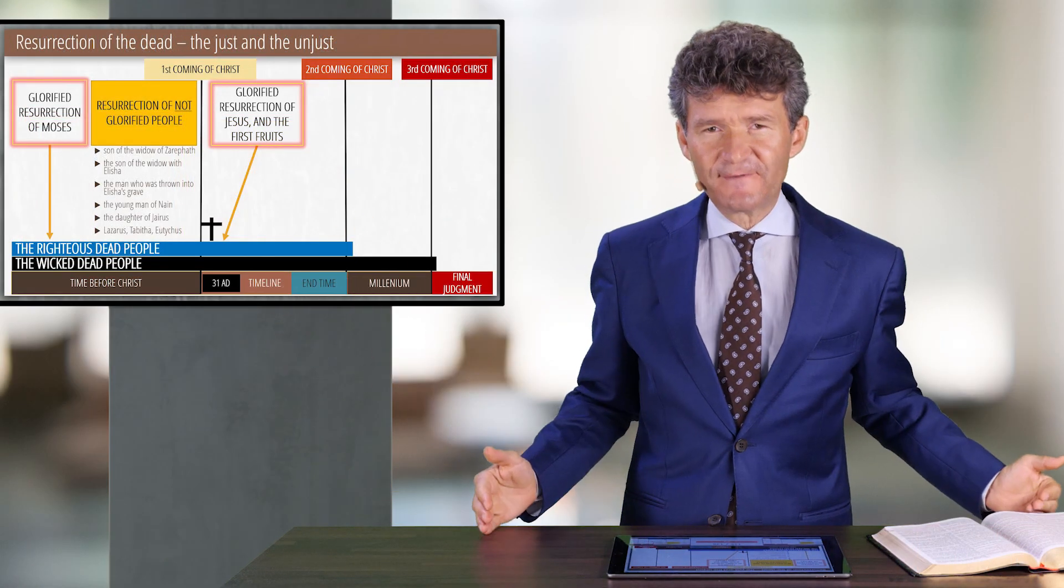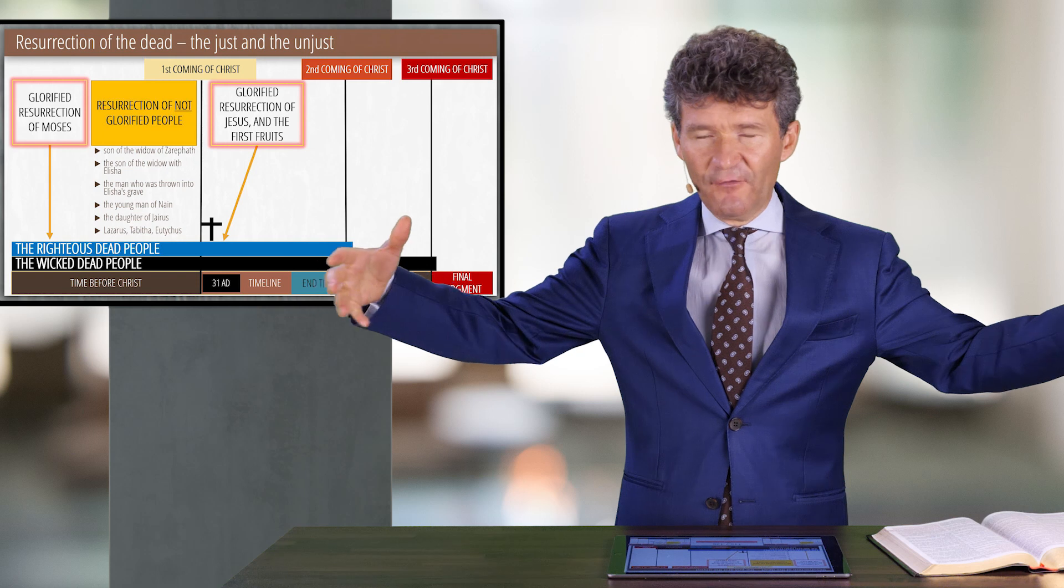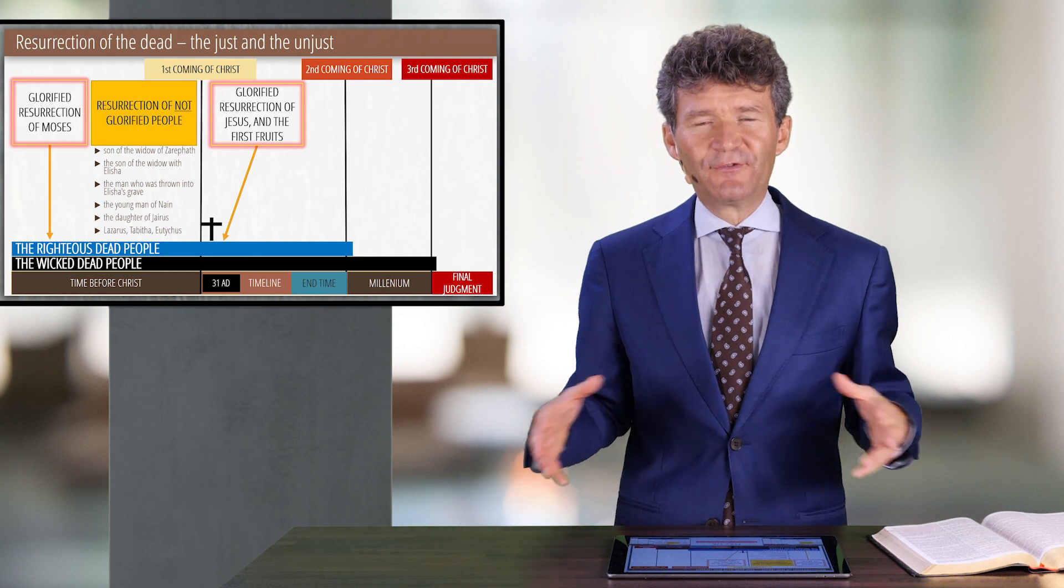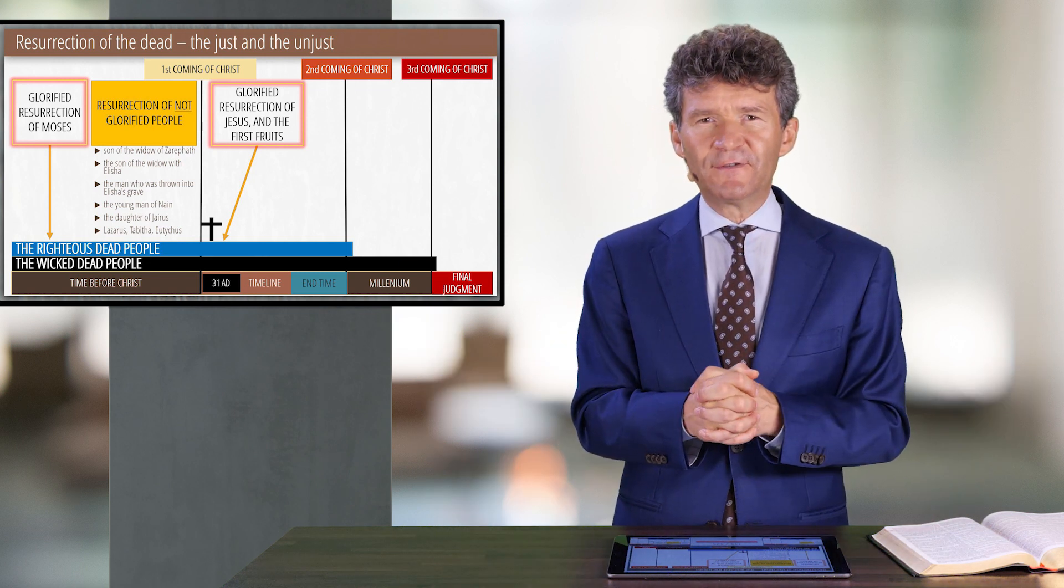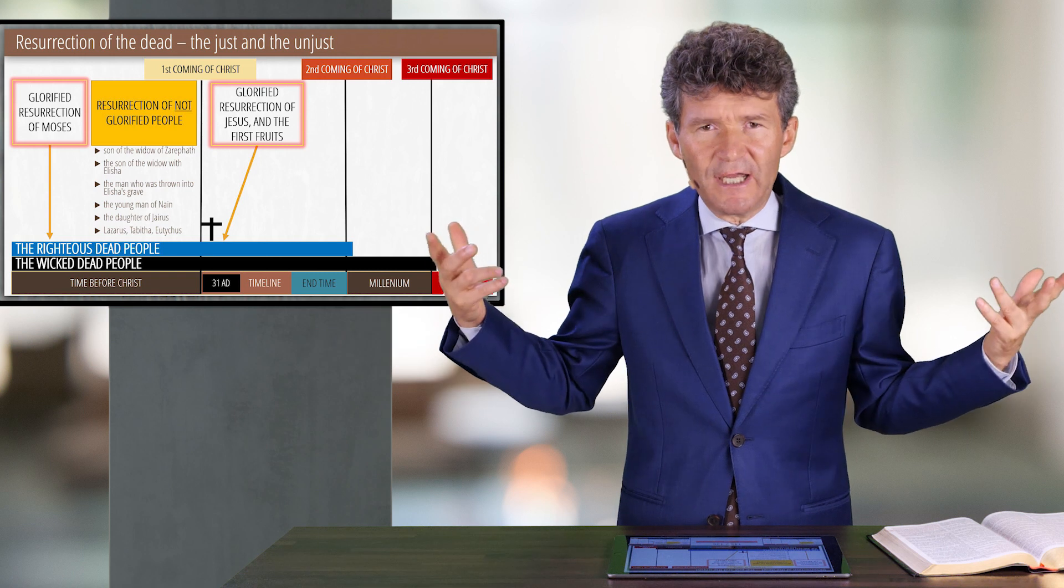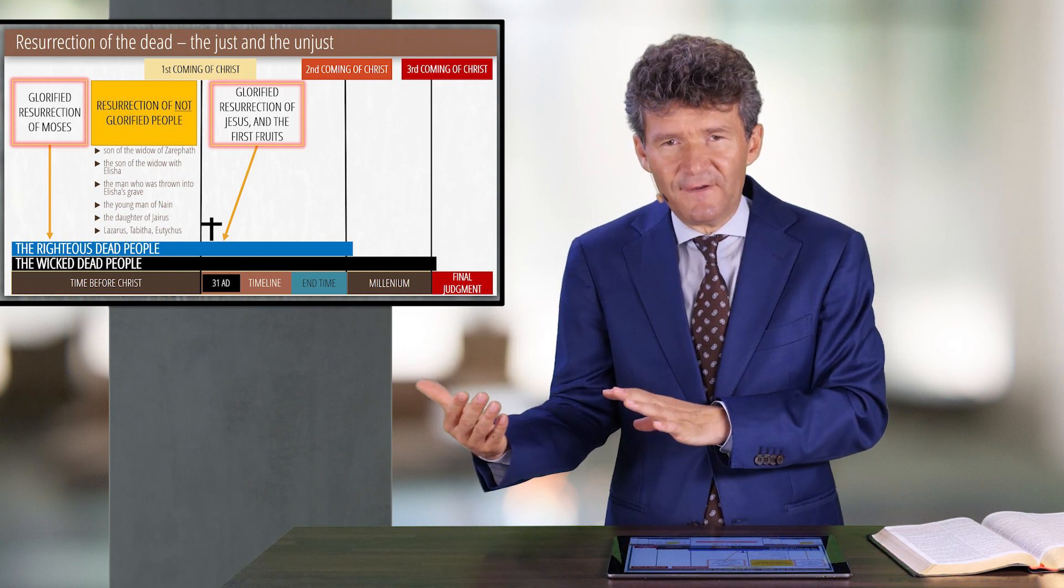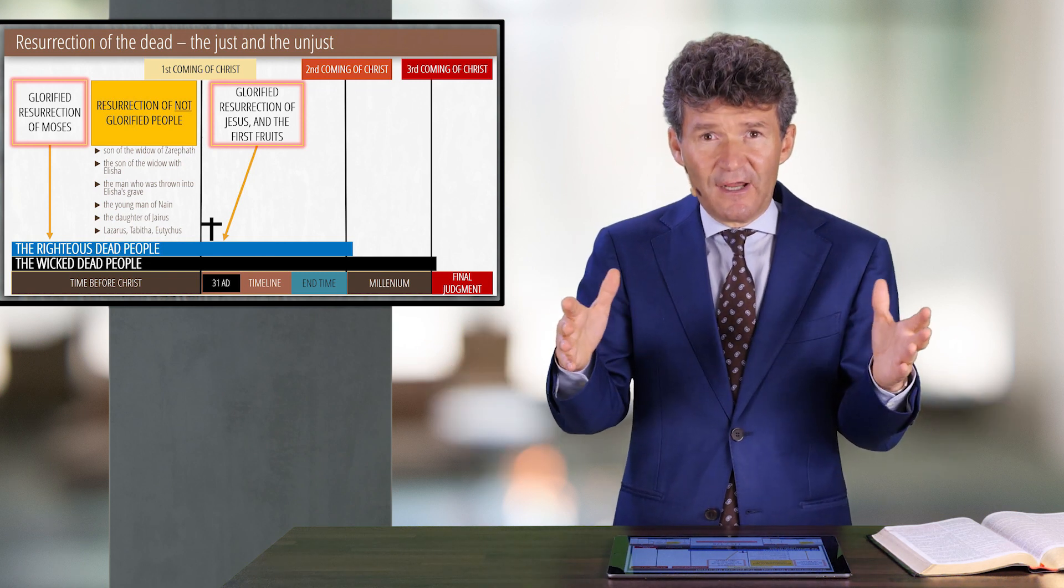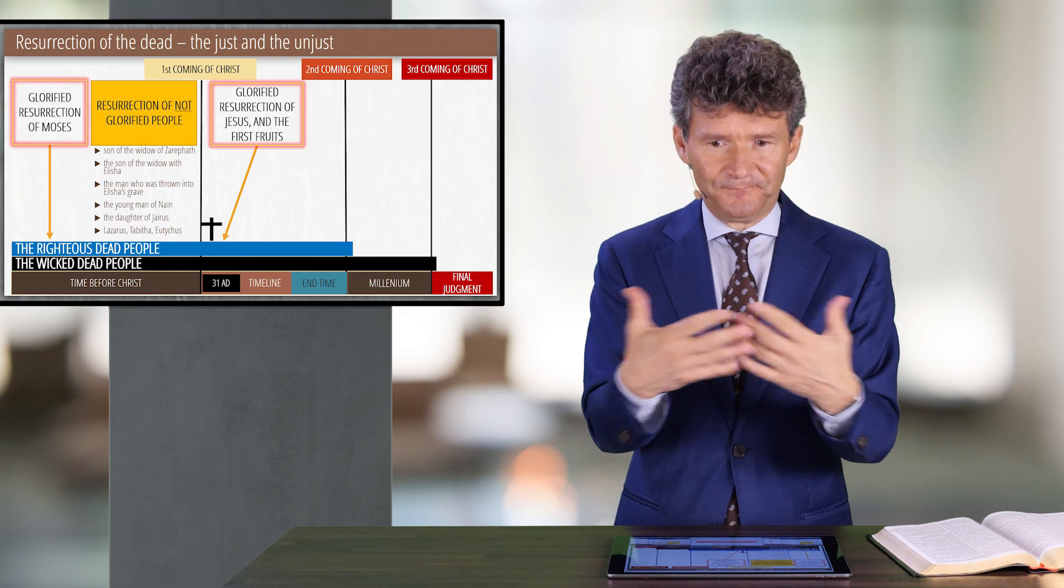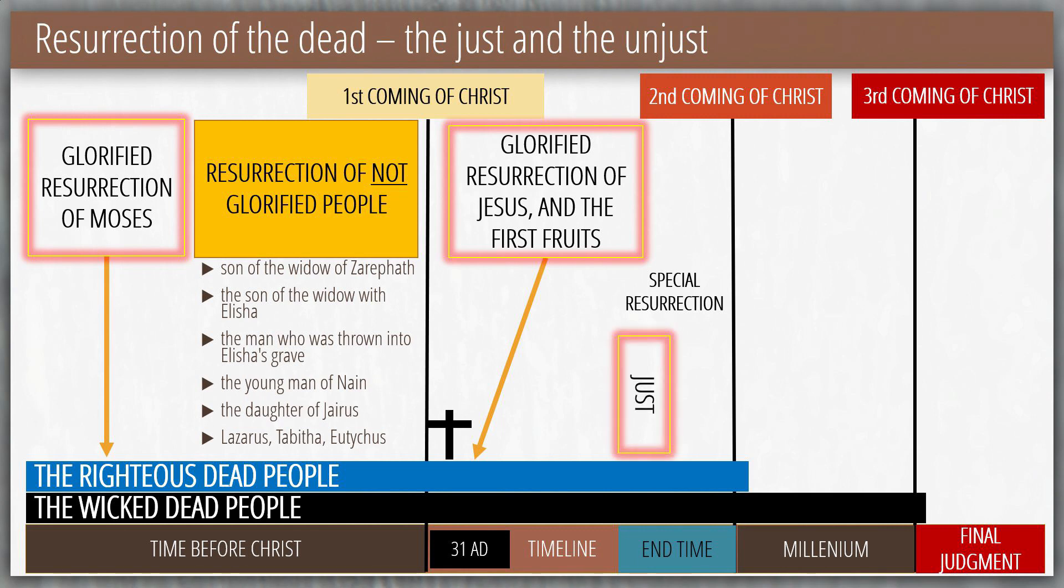With him the first fruits those graves that were opened through the earthquake in the evening of his death on the cross and those graves that were opened when Jesus came out of the grave they came out of the grave also glorified they were people that were living because they were known they were recognized by the others the Bible explains so they must have been living together with them they died and now they come out glorified never to die again never to have any temptation. Those are the first fruits then in the end time there will be a special resurrection of the just and of the unjust of the godless.